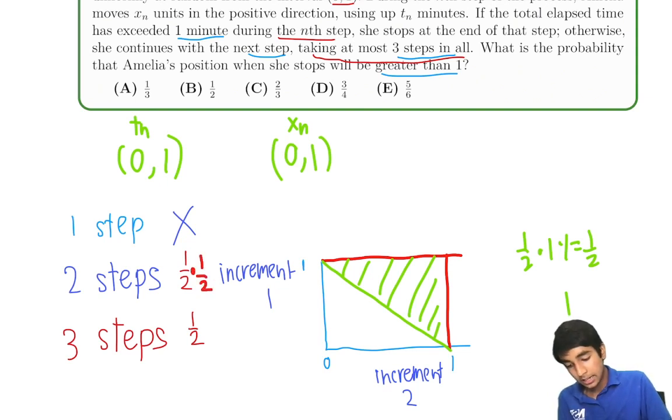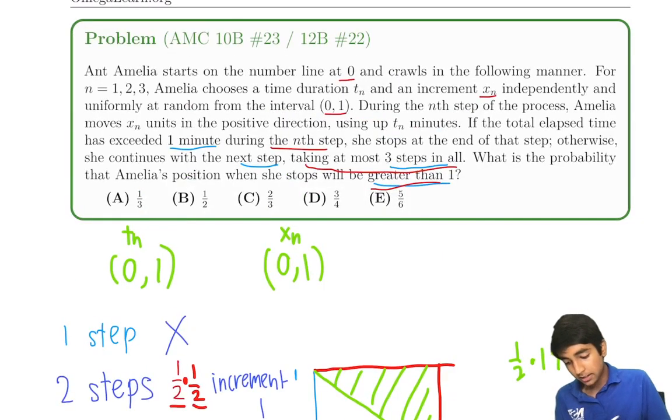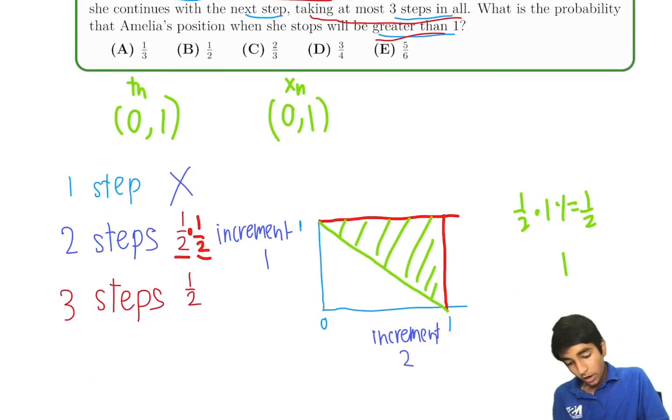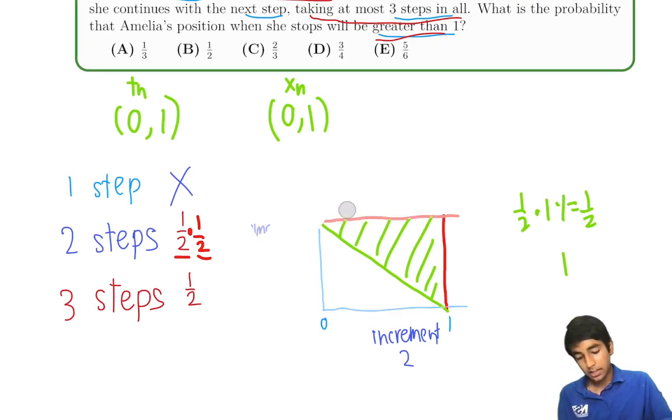So this is the probability we did take two steps, and this is the probability that if we did take two steps, then this is the probability will be greater than 1. And remember, they're chosen independently, so they're not related to each other or anything like that. Now we can erase it because now, what happens if we take three steps?